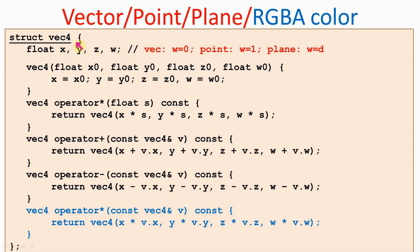If we want vec4 to represent a three-dimensional vector, the w-coordinate is set to zero. If it should represent a point, the w-coordinate is one. If it is a plane, then the x, y, z components are the coordinates of the normal vector of the plane, and the w component is the d parameter — the offset of the plane from the origin of our ambient space using the units of the normal vector.